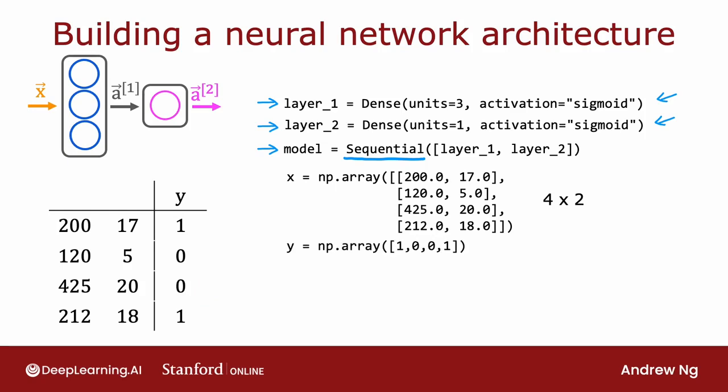And the target labels y can then be written as follows. And this is just a one-dimensional array of length 4. Y, this set of targets, can then be stored as a 1d array like this, 1, 0, 0, 1, corresponding to the four training examples.